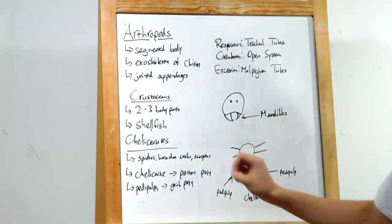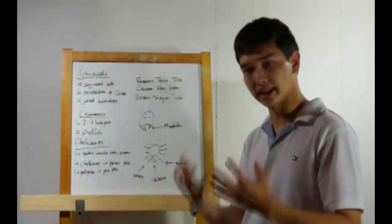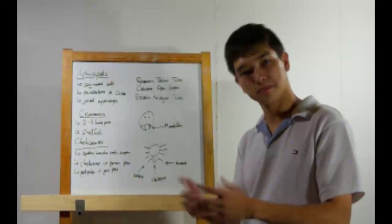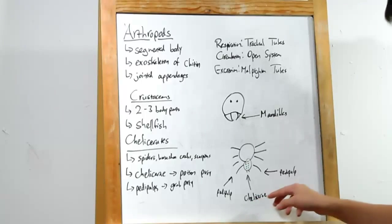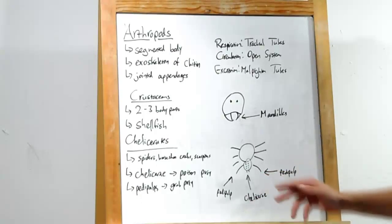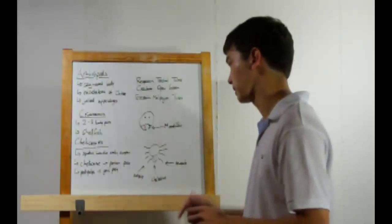Let's move on. Chelicerates. Think spiders, horseshoe crabs, scorpions, that kind of thing. They're named chelicerates because they have these structures called chelicerae. These are used to poison their prey. On a spider, think spider fangs. Things that got Peter Parker his awesome powers.